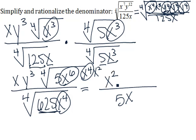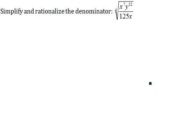So if we pull that to the outside, we have an x squared now, still y cubed, and the fourth root of 5x squared. We can simplify this one step farther by eliminating an x in the top and the bottom.